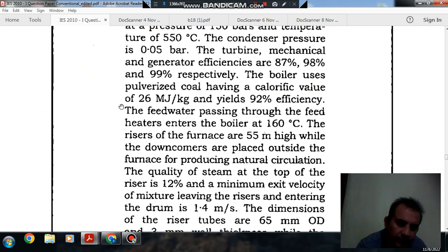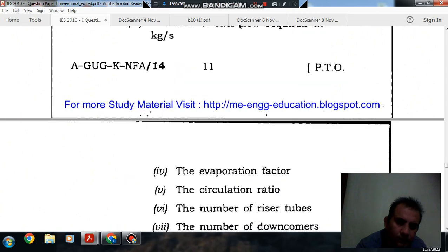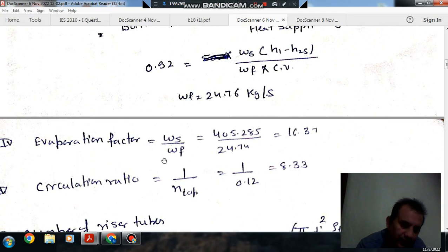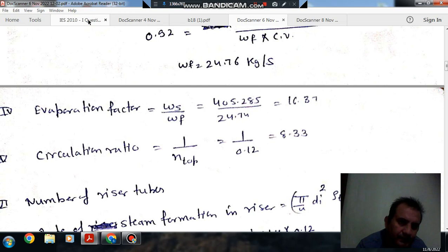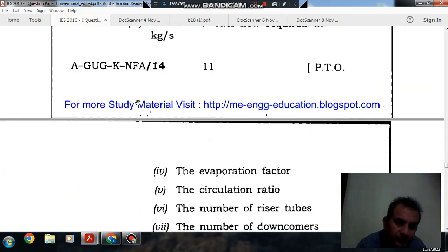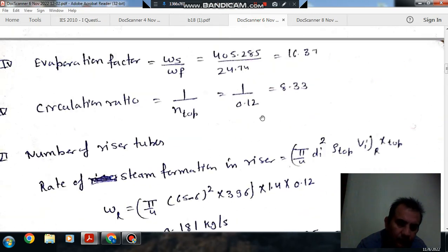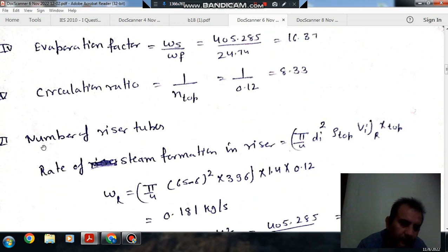Next question is evaporation factor, which is just the ratio of omega S by omega F. That comes out as 16.87. And next is the circulation ratio. Circulation ratio is 1 by dryness fraction at the top of the riser, and the dryness factor is given as 12%, so it will be 1 by 0.12, so that is 8.33.